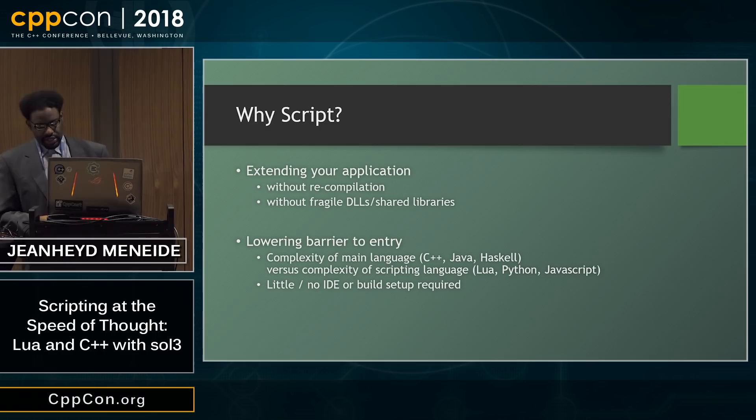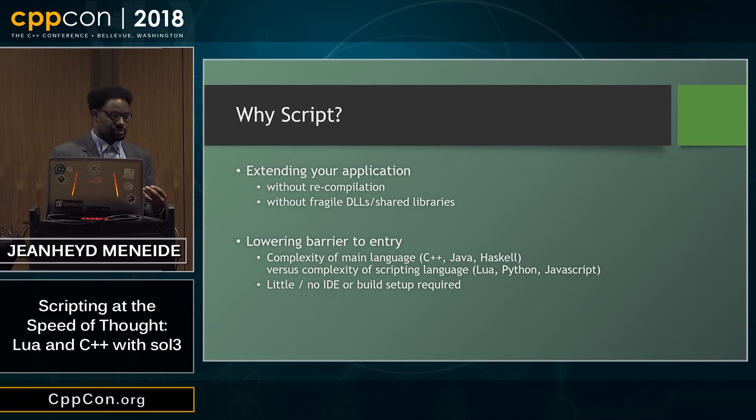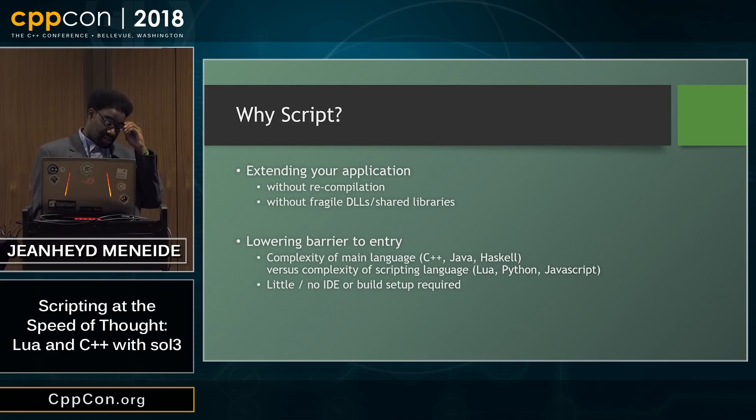You want to extend your application, but you don't want to have to do things like hot reload or recompile all the time, and you don't want to always have to try and define a plug-in architecture through DLLs and other things like that, which can be incredibly fragile. You might change your API. C++ doesn't really have a very stable ABI, so trying to keep something between versions can be very, very difficult. You'd have to either stick with C or do some other things to make sure that you can extend your application.